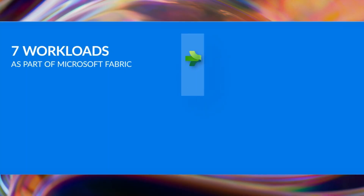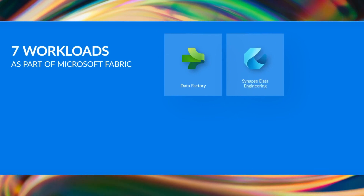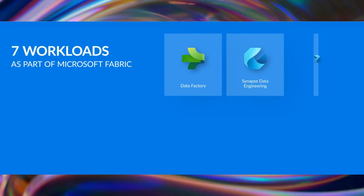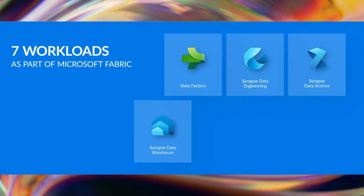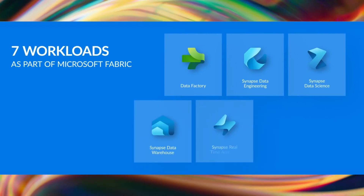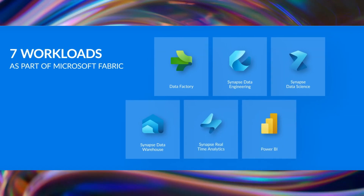That's a fantastic intro into what Fabric can do, but what are the different products available inside of Fabric? These products are referred to as workloads, and there are seven in total: Data Factory, Synapse Data Engineering, Synapse Data Science, Synapse Data Warehousing, Synapse Real-Time Analytics, Power BI, and Data Activator.